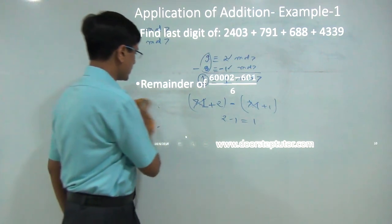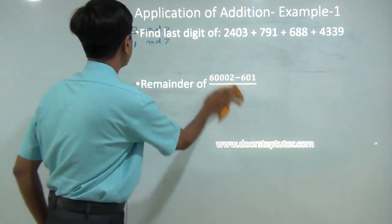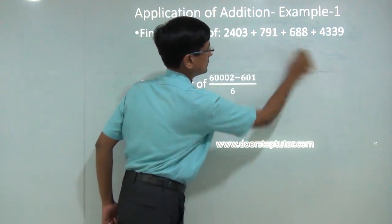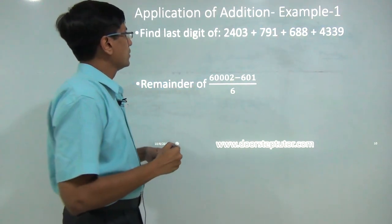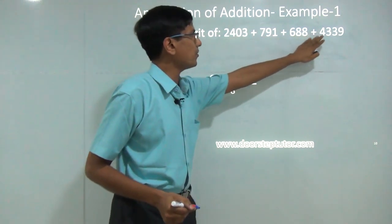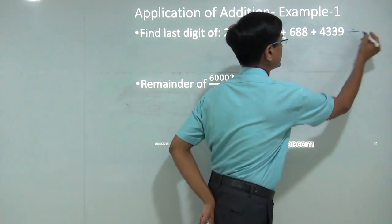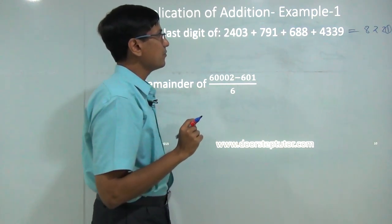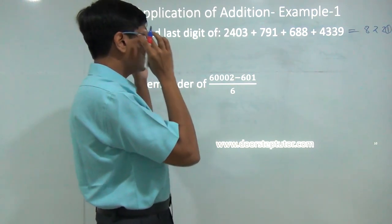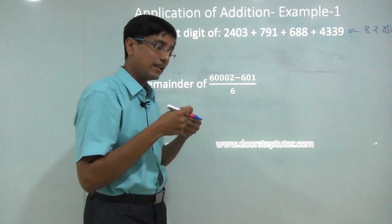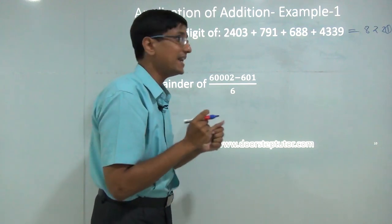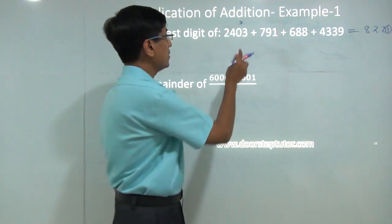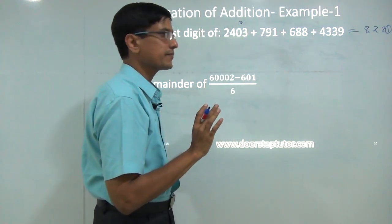Let's take a couple of examples to see how the addition and subtraction property of congruence simplifies our life. We have been asked to find the last digit of a sum. One way is to calculate the sum directly. Another way: the last digit of any number is the remainder when that number is divided by 10. So the last digit of 2403 is 3, which is also the remainder when divided by 10.